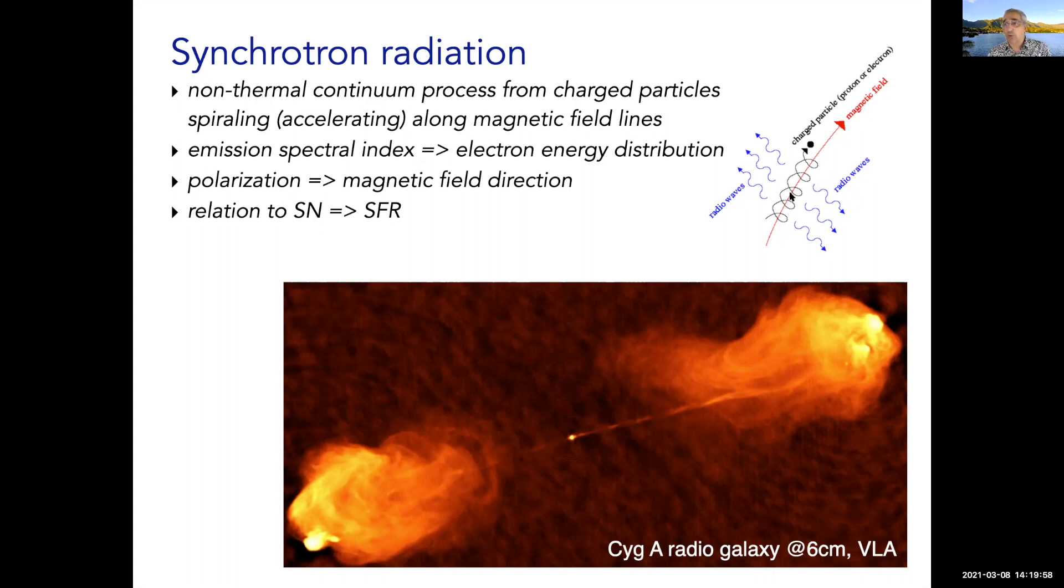Because this requires very fast moving electrons that are generally created in supernova shocks or AGN, it tells you about supernovae, which relates to massive stars, which have short lifetimes, and therefore tells you about the star formation rate. Here we have a nice image at six centimeters from the VLA of Cygnus A, a very famous radio galaxy. There's a bright source at the center, the AGN, and it's shooting out jets in both directions that produce these huge radio lobes on the sky.